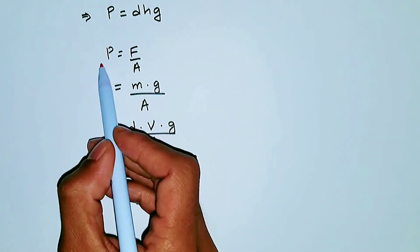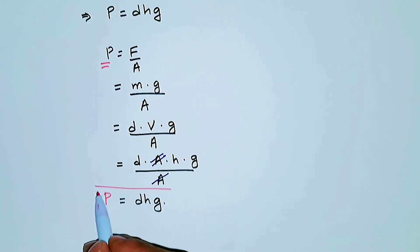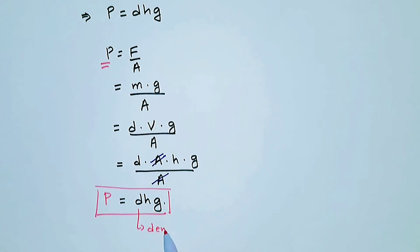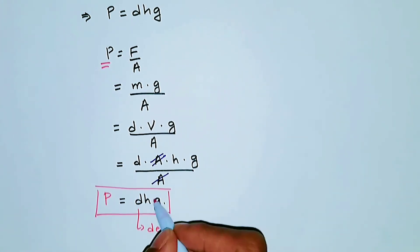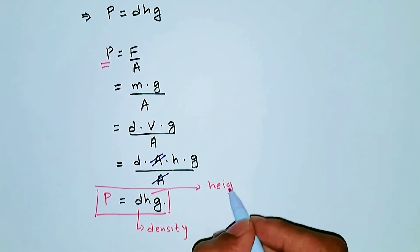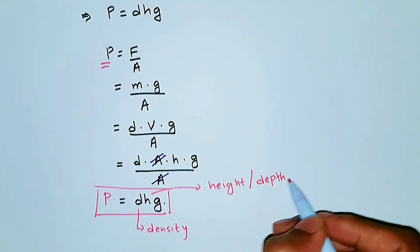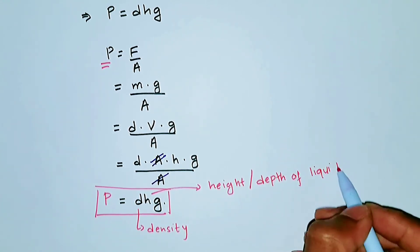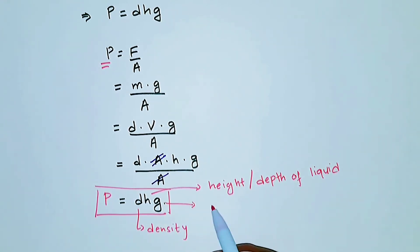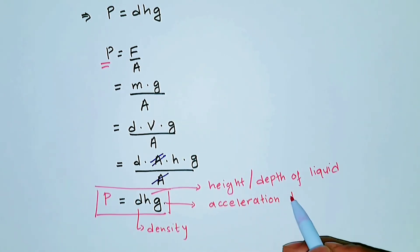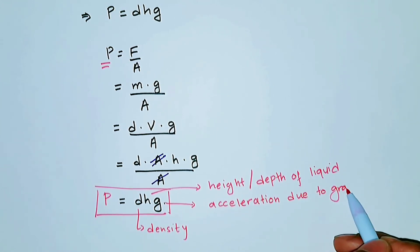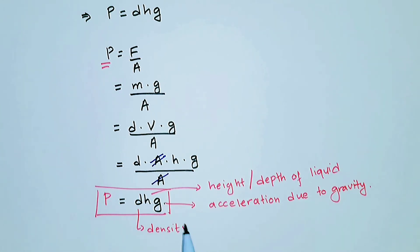So you have pressure equals D dot H dot G. Here D is density, H is actually height — but in the case of liquid, instead of height it's called the depth of liquid. And G is acceleration due to gravity. That's the formula for liquid pressure. Thank you.